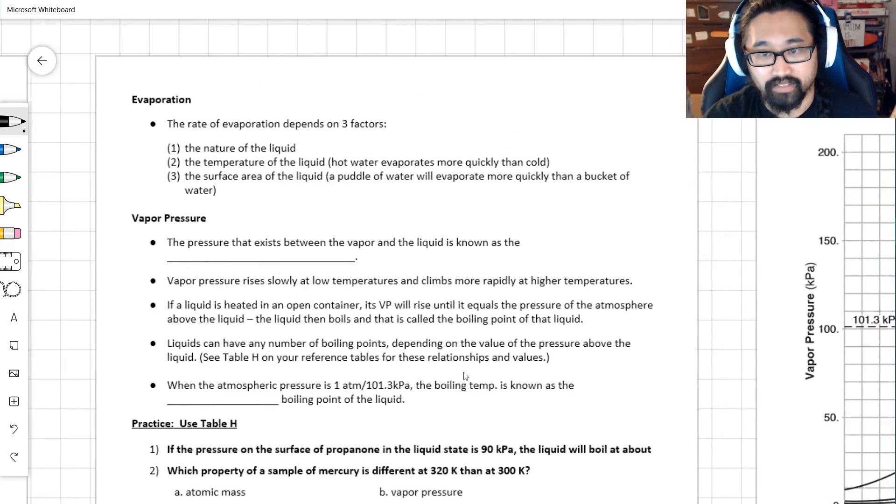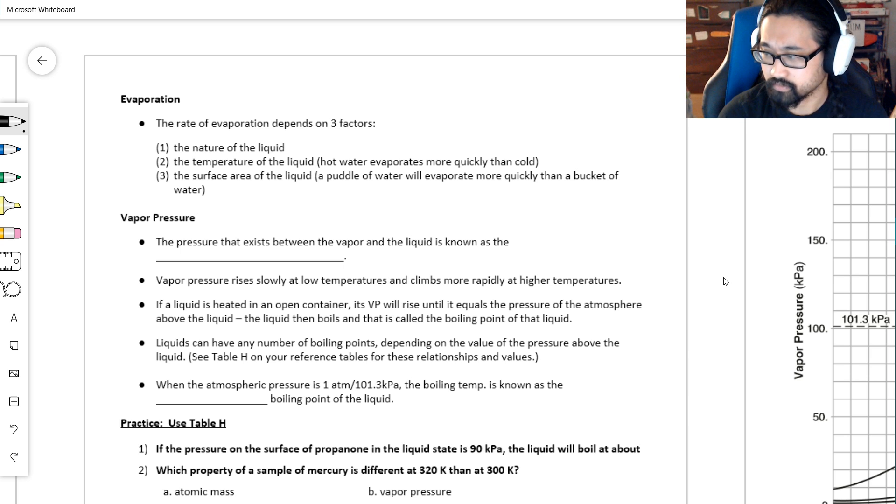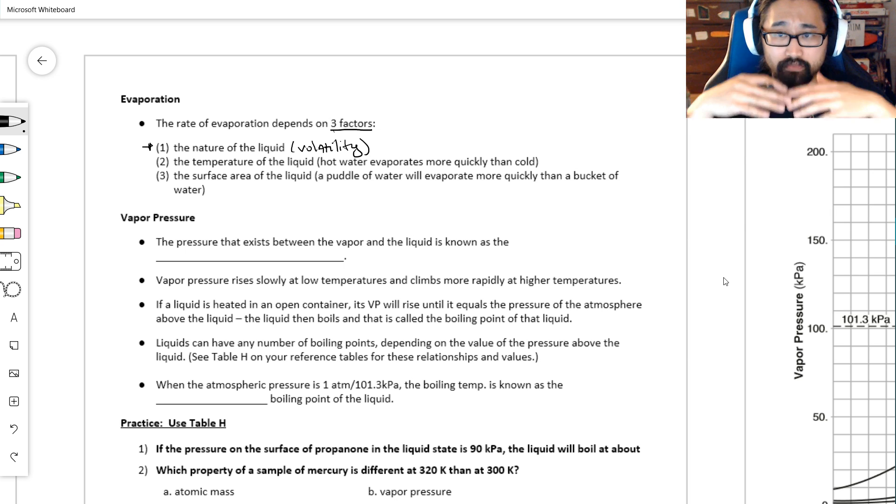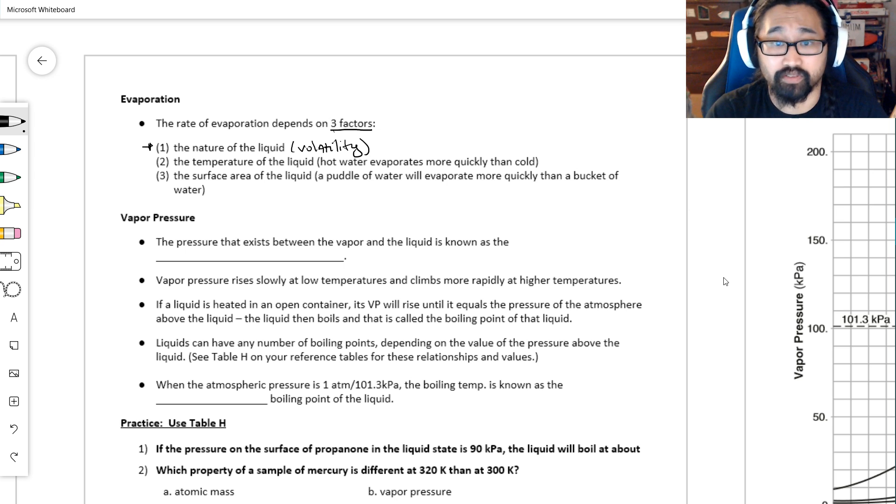Evaporation depends on three things. The nature of the liquid is something we refer to as volatility. If you hear that something is volatile, all that means is it changes from a liquid to a gas easily. So a volatile liquid is just something that will evaporate very easily. Temperature—hot water evaporates more quickly than cold. Water on the roads here in Syracuse, if there's water on the roads and it's only 20 degrees outside, eventually it'll still evaporate. And then surface area. A puddle of water will evaporate more quickly than a bucket. The more liquid is showing, the more surface area there is, it'll evaporate faster.